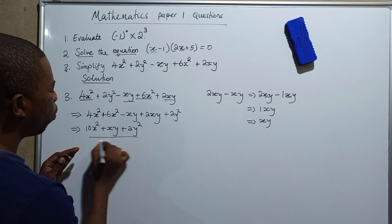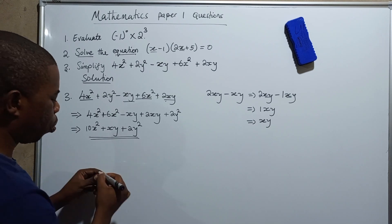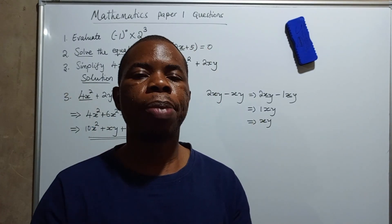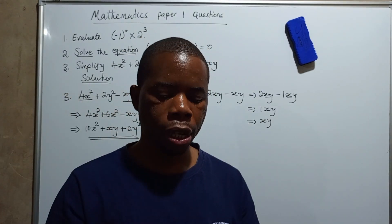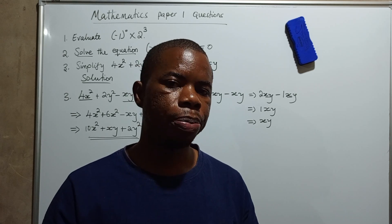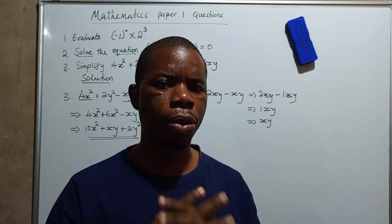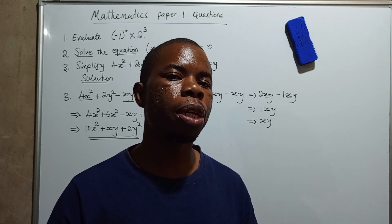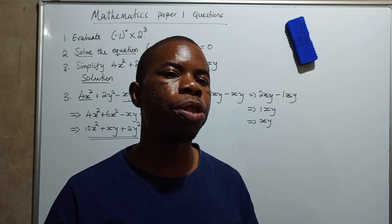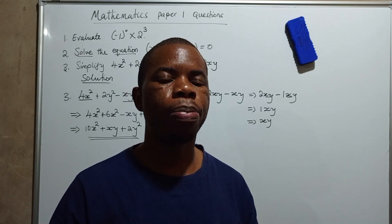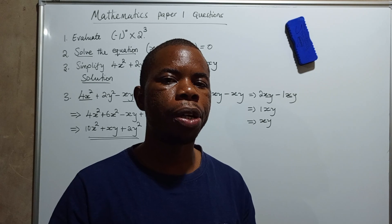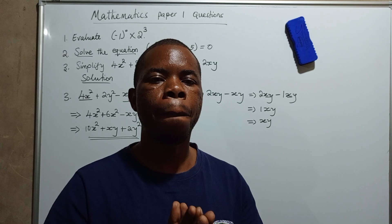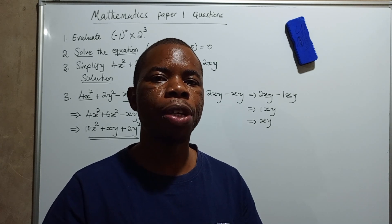So the final answer is ten x squared plus xy plus two y squared. Mathematics is a very simple subject to pass, provided you follow the concepts laid out. Once you master those concepts and apply them when answering, you will discover that mathematics is very easy to pass. Thank you very much for watching — bye and see you in the next video.